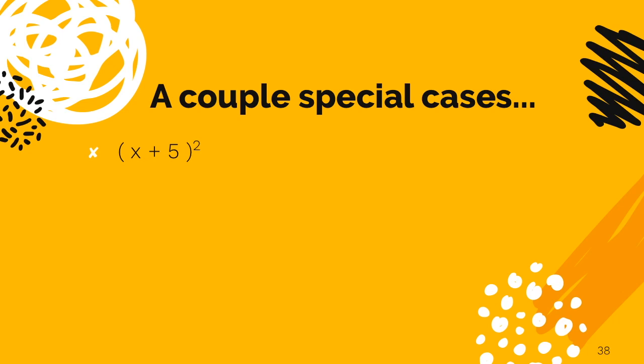Instead, you first need to write it as the product of two binomials, x plus 5 times x plus 5. So then you can foil it out and you get x squared plus 10x plus 25. And you notice the answer is not x squared plus 25. There is a middle term there, 10x.